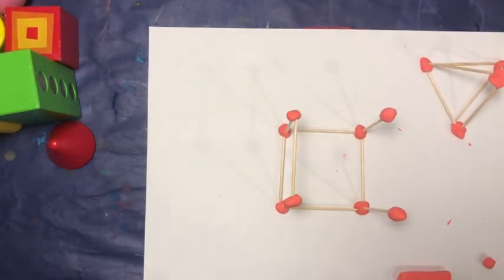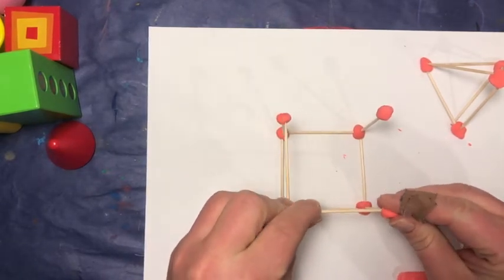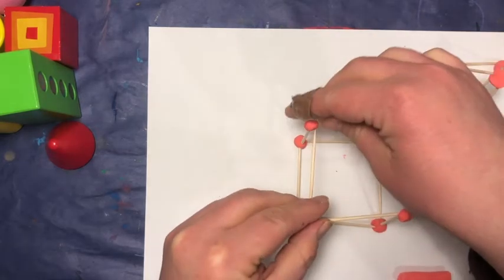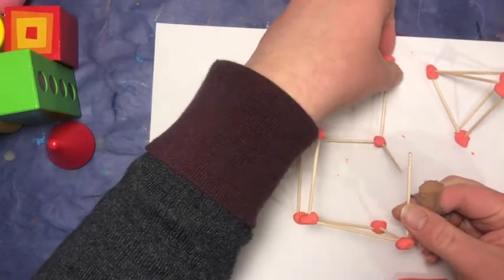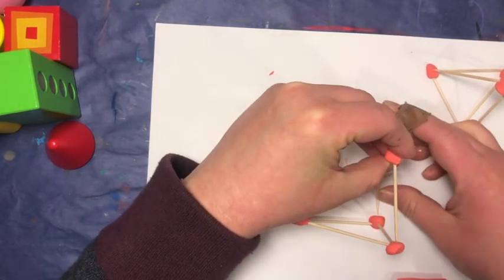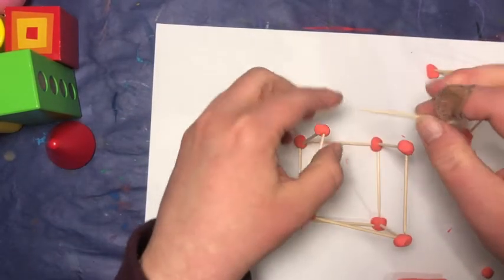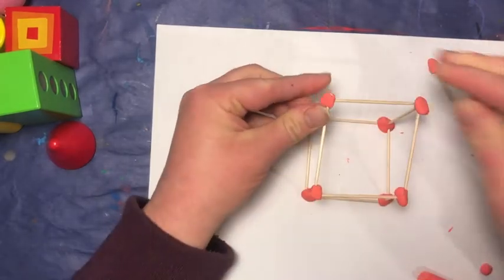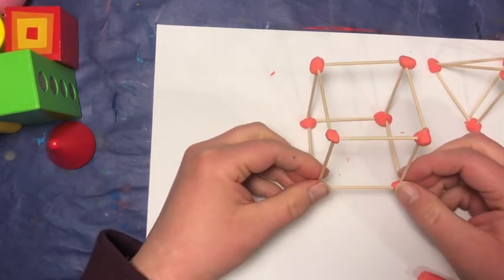Okay, and I am just going to add a toothpick connecting each one of these sides before it falls apart. There we go. Now I have my three-dimensional cube.